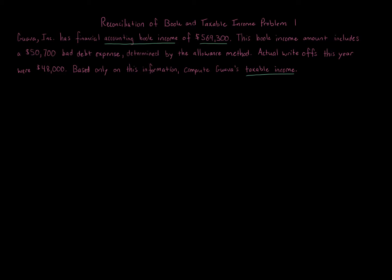The idea is that under financial accounting, under GAAP — generally accepted accounting principles — there are certain rules that apply. Many of the rules are the same as tax, where the rules are determined by Congress under law. Many times they're the same, and then sometimes they're not, depending on the specific application.